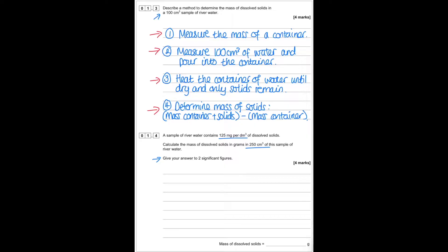First of all we've got to do our conversions. For the concentration, instead of having 125 milligrams, to convert that into grams we divide by 1000, which gives us 0.125 grams per dm³. Then to change our volume we convert 250 cm³ into dm³, again by dividing by 1000, giving us 0.25 dm³.